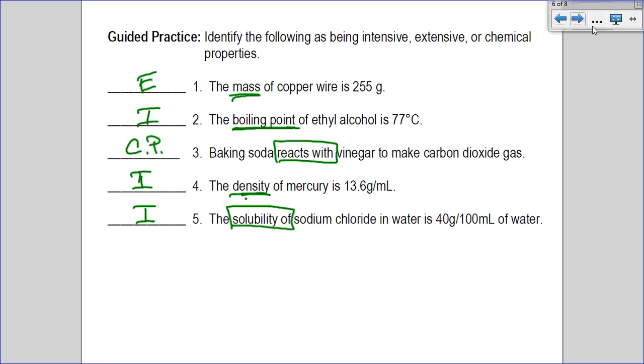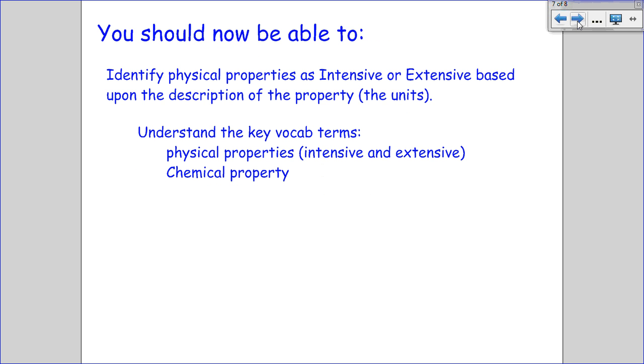So at this point, you should understand that physical properties can be either intensive or extensive and used to identify matter. The key vocab terms that you have to be responsible for are physical properties, which include intensive and extensive, and chemical property, which means basically be able to identify something as a chemical property because the verbiage used to describe that observation includes reacts, combines, or reacts with. Hope you enjoyed your second notes video. Thanks, all.